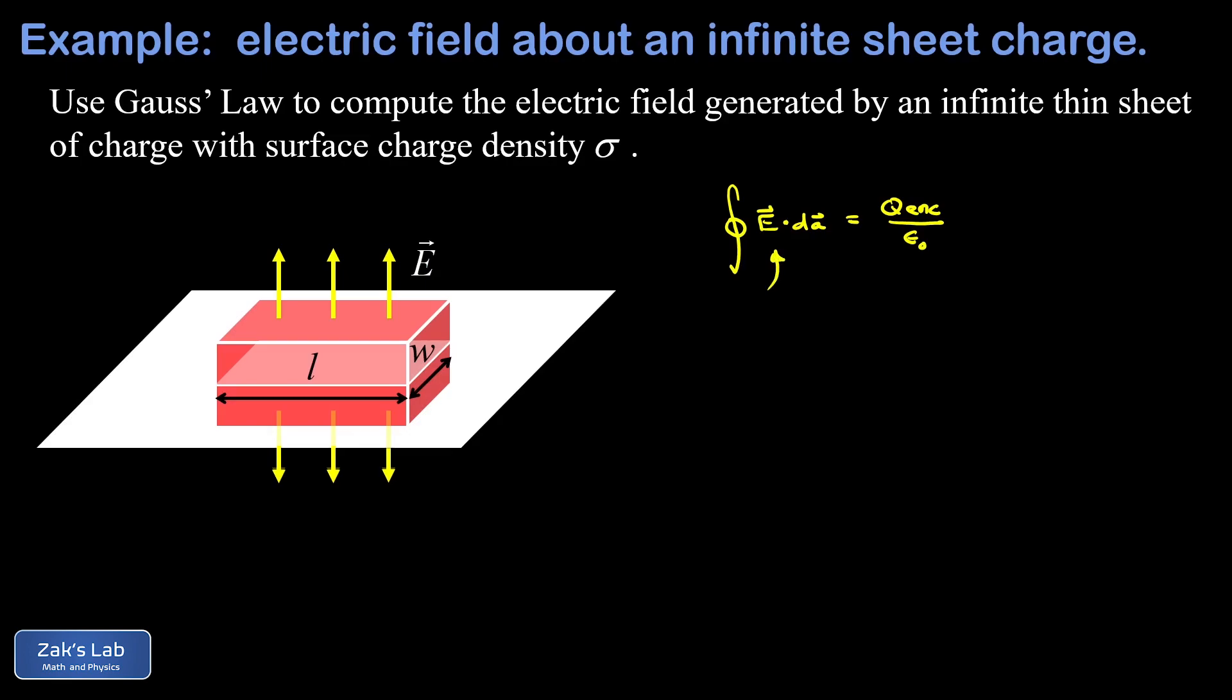First, the electric flux contribution from the side walls of the Gaussian pillbox is going to be zero because the electric field is parallel to the area elements there. In other words, perpendicular to the normal vector, there is no electric field penetrating the surface through the side walls.